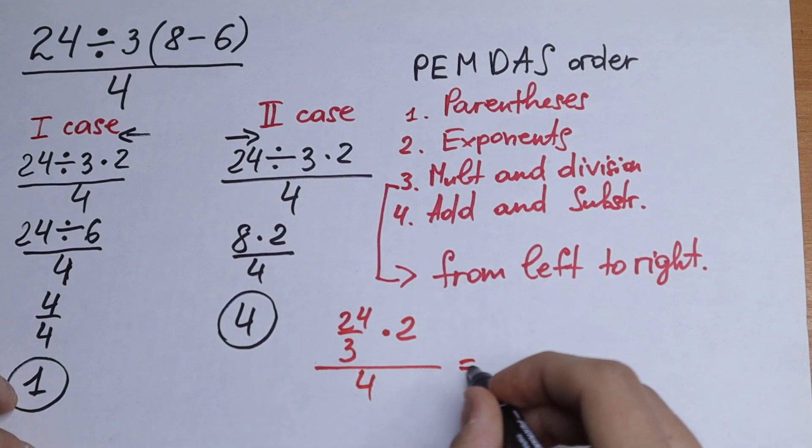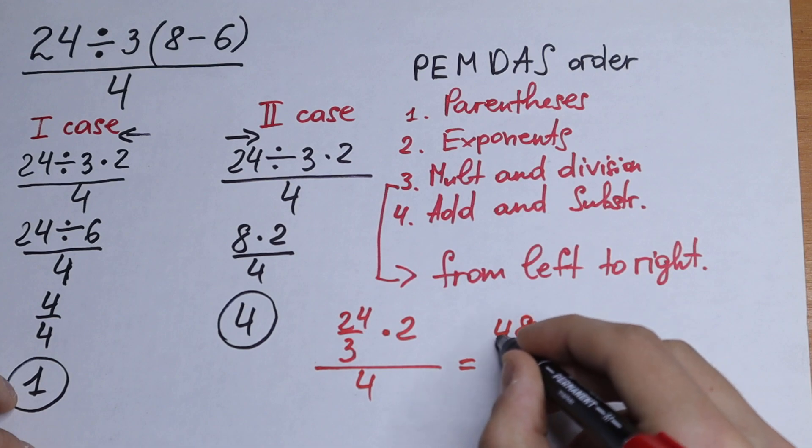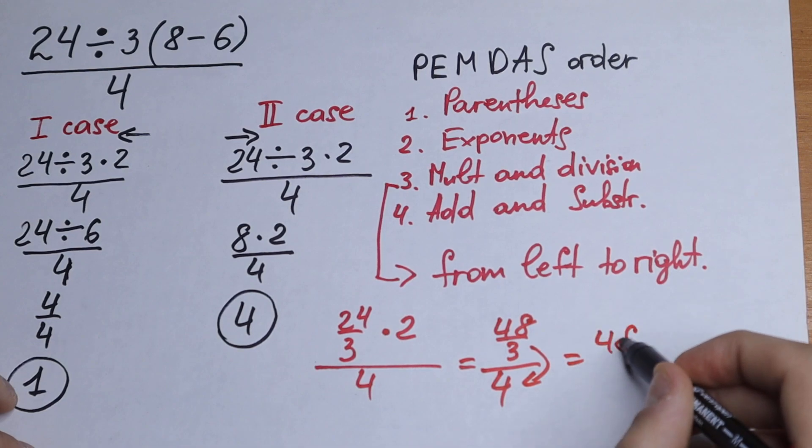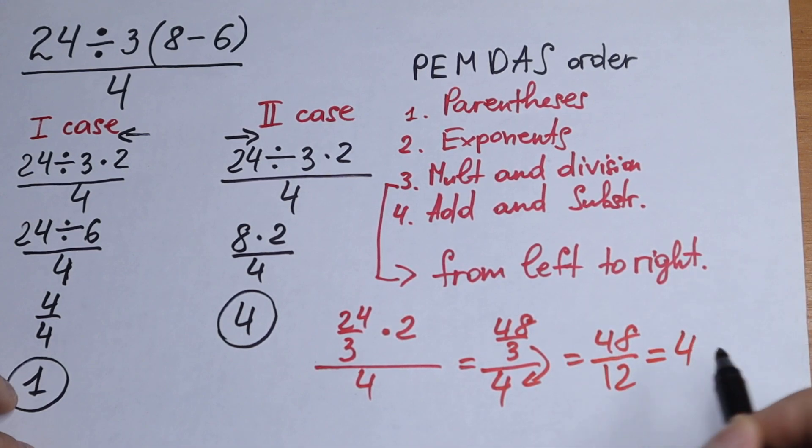Here we have 48 over 3 and over 4. We all know that these three jump right here. We will have 48 divided by 12. It will be 4.